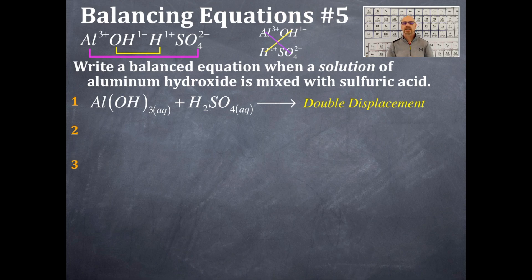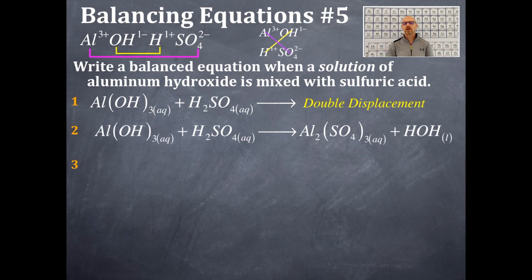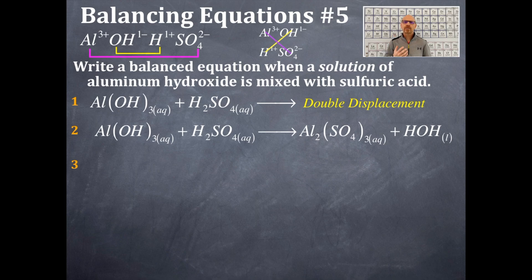Now I look at the state of matter and solubility rules for all of these. Sulfates are soluble except for barium, strontium, and lead. Therefore, aluminum sulfate is aqueous. Now we do some balancing, starting with the most complicated formula — aluminum sulfate on the product side, which has the most unusual elements.